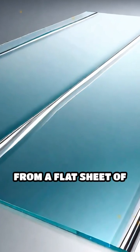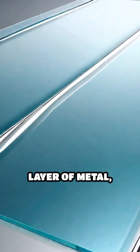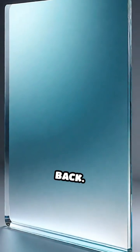Mirrors are typically made from a flat sheet of glass with a thin layer of metal, like aluminum or silver, applied to the back.